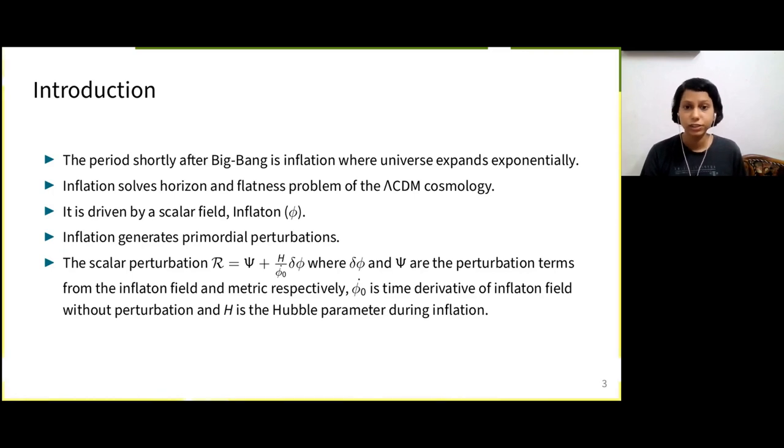We can write the gauge invariant curvature perturbation for scalars as r equal to chi plus h del phi divided by time derivative of phi naught, where del phi comes from the perturbed inflaton field and chi from the perturbed metric. Phi naught is the background inflaton field without perturbations and h is the Hubble parameter.